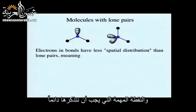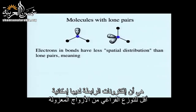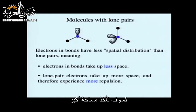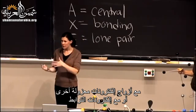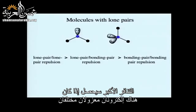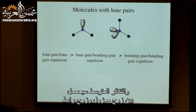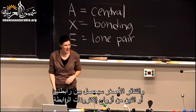Once we have lone pairs, we need to think about how they affect geometry. Electrons in bonds take up less spatial distribution — less space — than lone pairs. Lone pairs experience more repulsion. The order of repulsion from greatest to least is: lone pair–lone pair, then lone pair–bonding pair, then bonding pair–bonding pair.